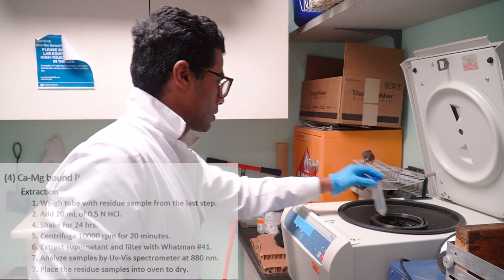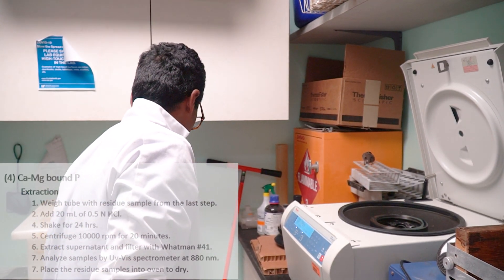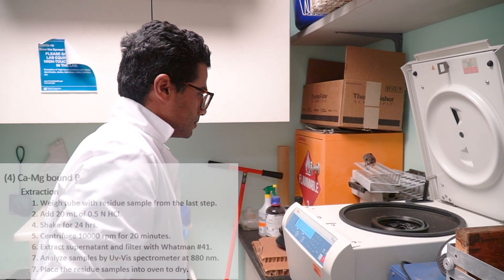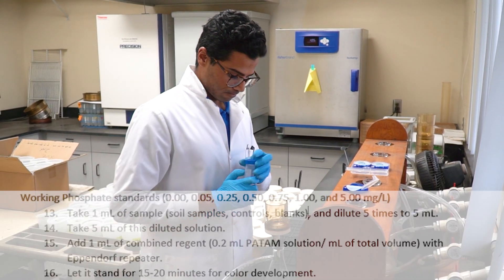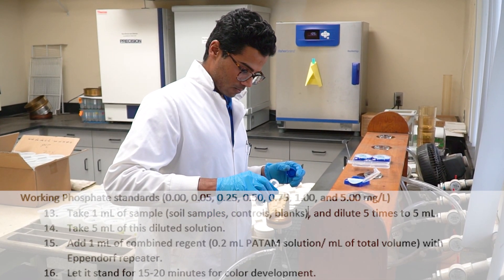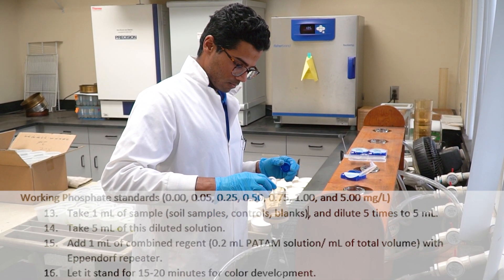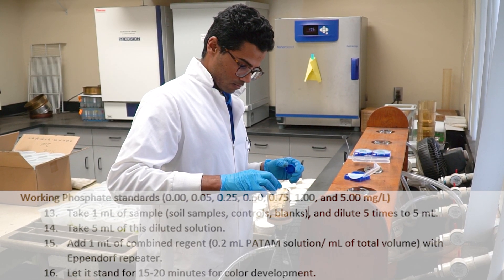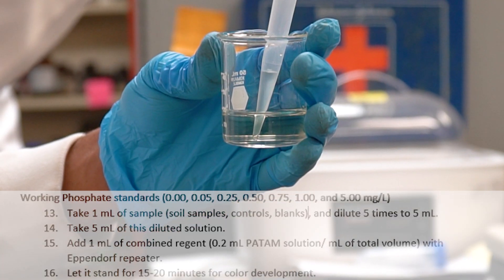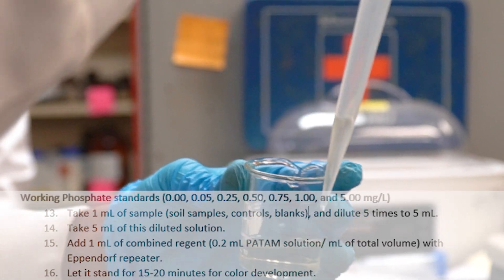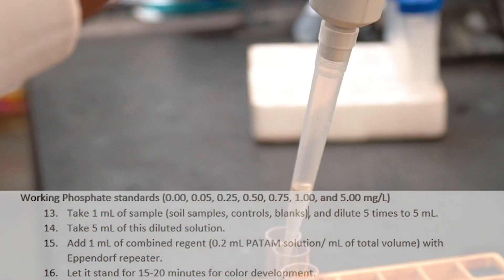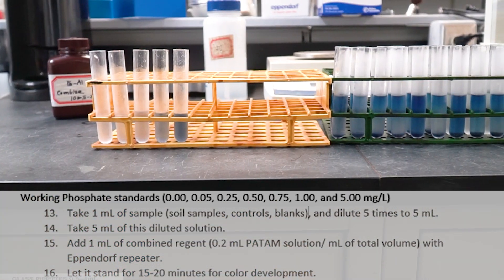Then we have to extract the supernatant, filter out with Whatman 41 filter papers. Then we have to analyze the supernatant using UV-Vis spectrometer at 880 nanometer. Again we have to put our residue into the oven to begin the next extraction.